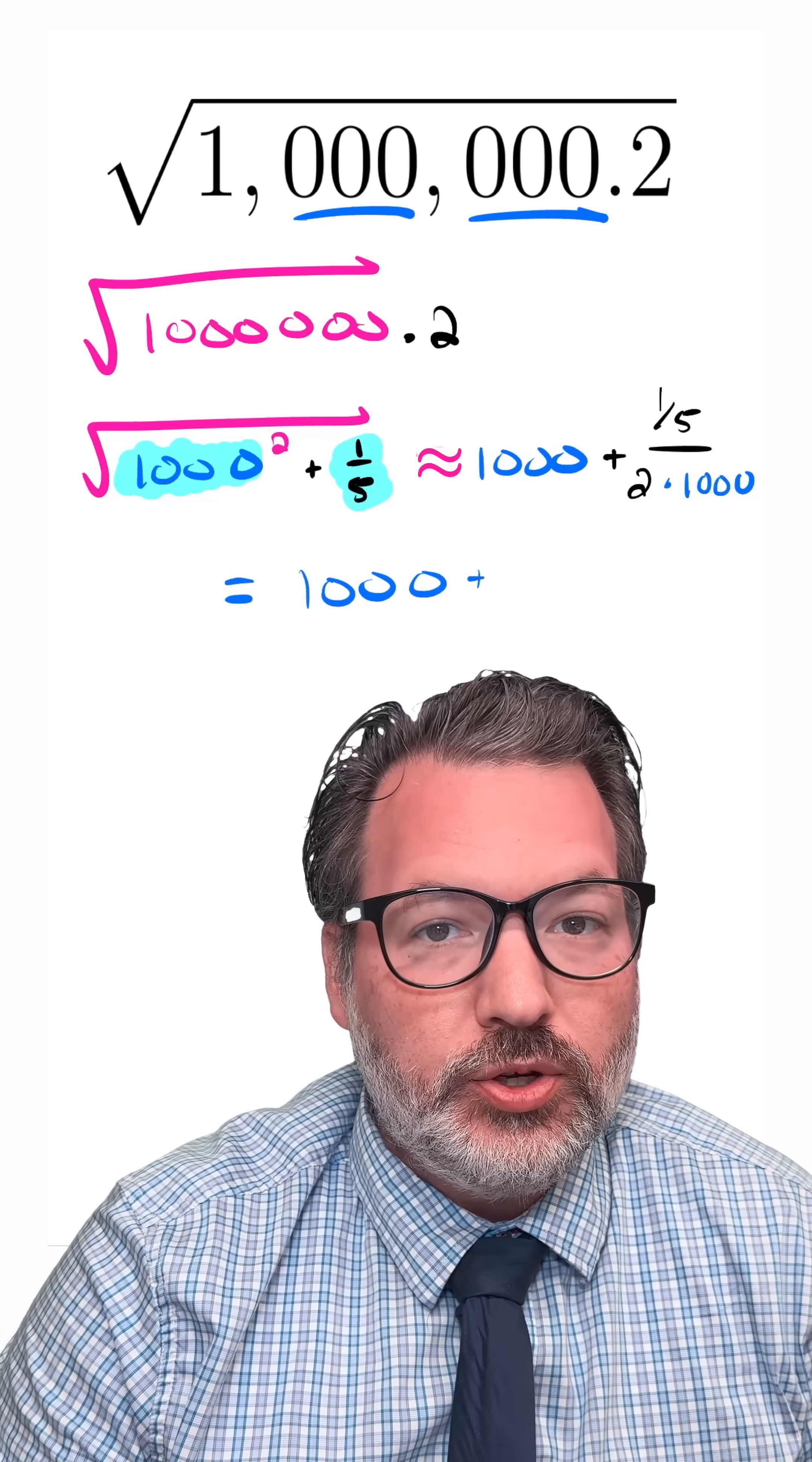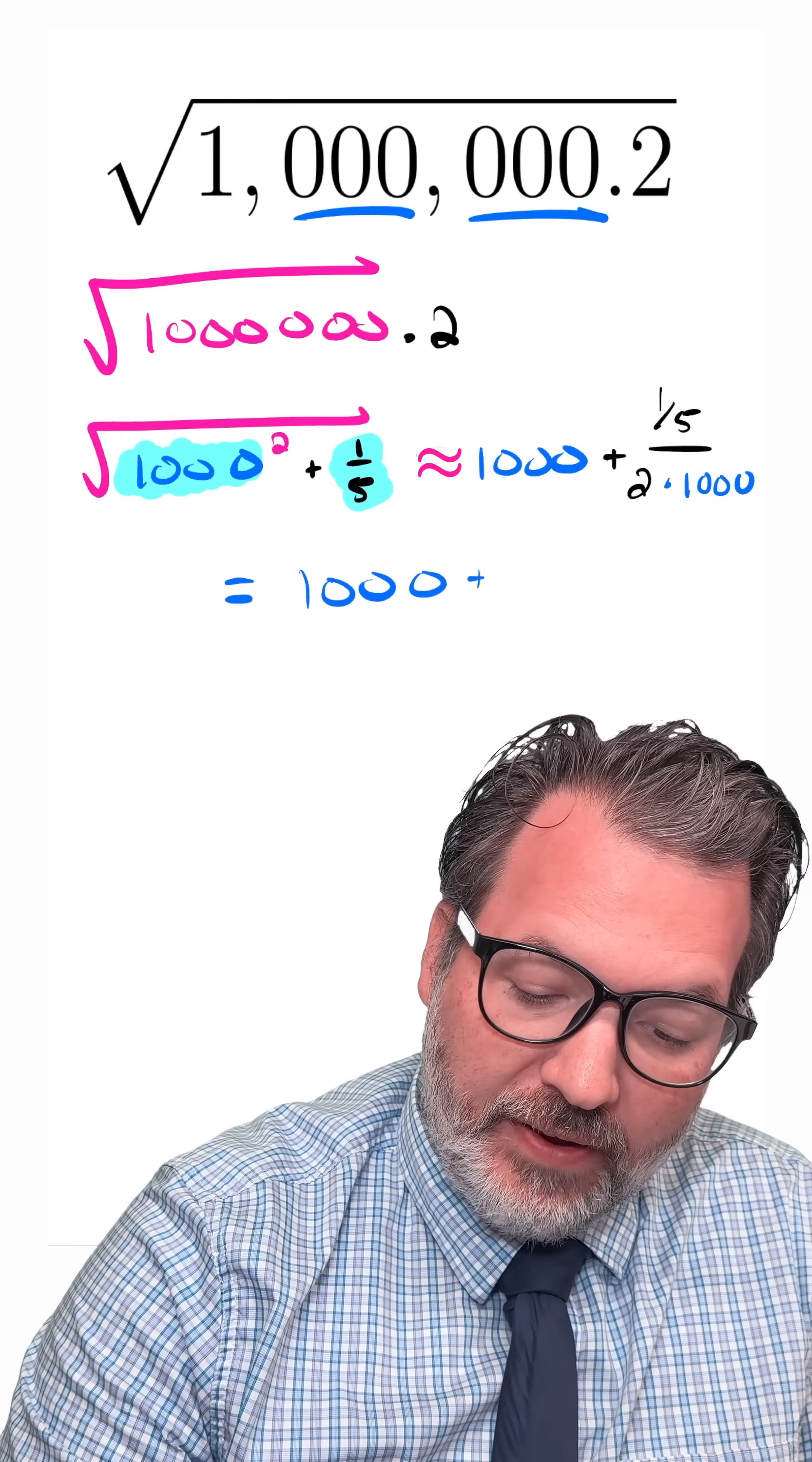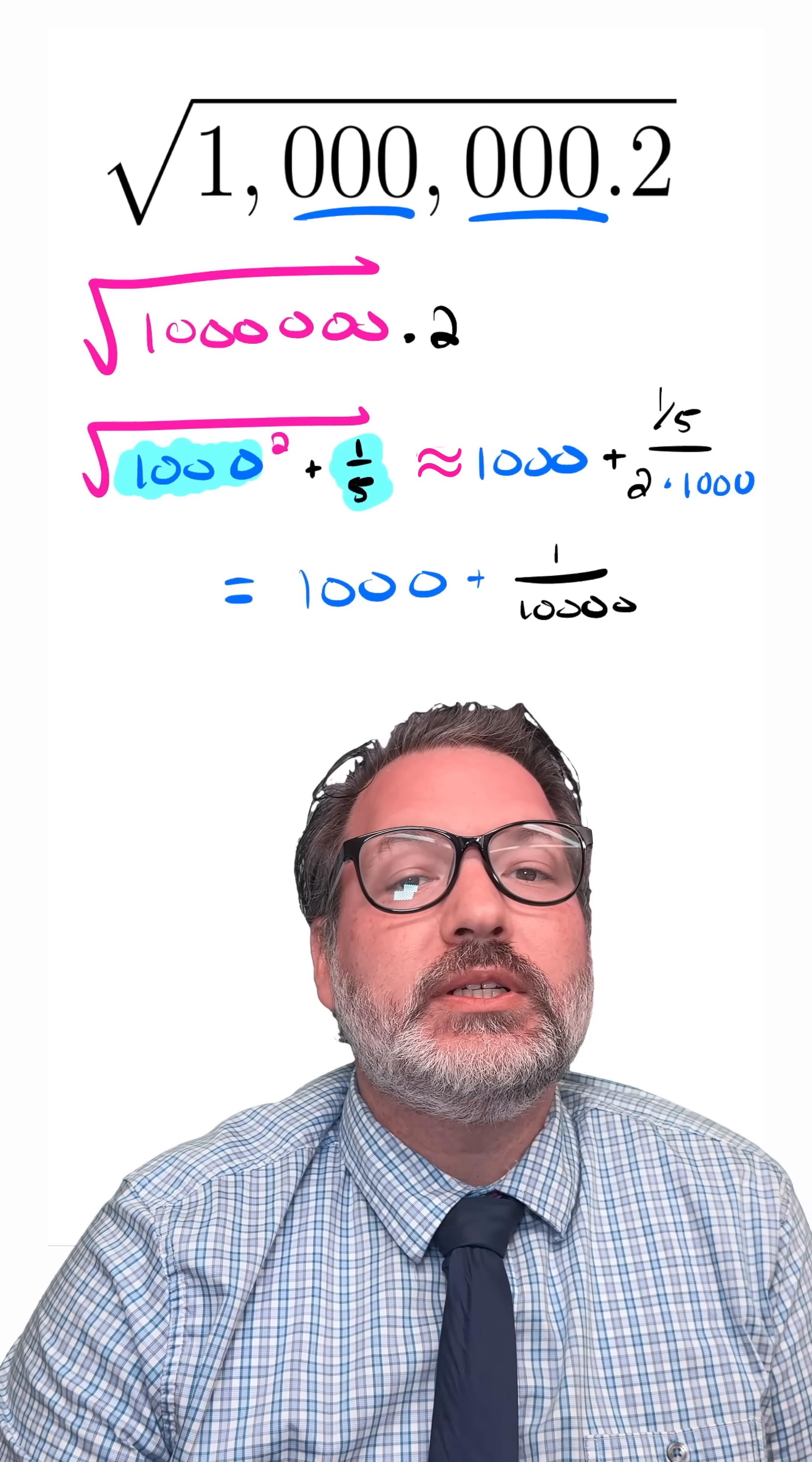But 1/5 divided by 2 times 1,000 is 1/5 divided by 2,000, which itself, if we move that 5 denominator on top down to the overall denominator, gives us back 1 over 10,000.